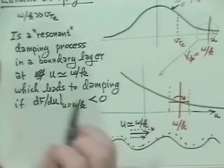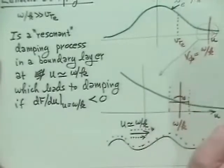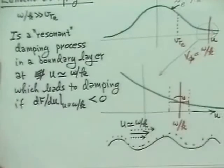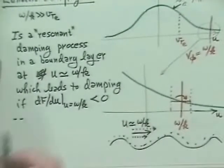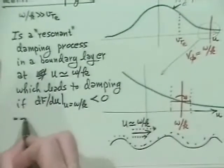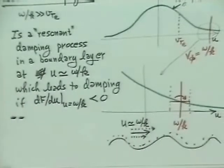In a moment we'll discuss the bump-on-tail instability: if there is a beam of particles out on the tail of the distribution, dF/du can be positive for a while, giving growth instead of damping.